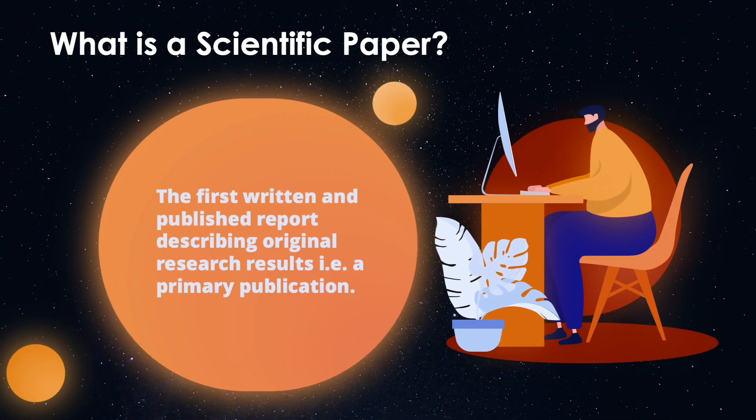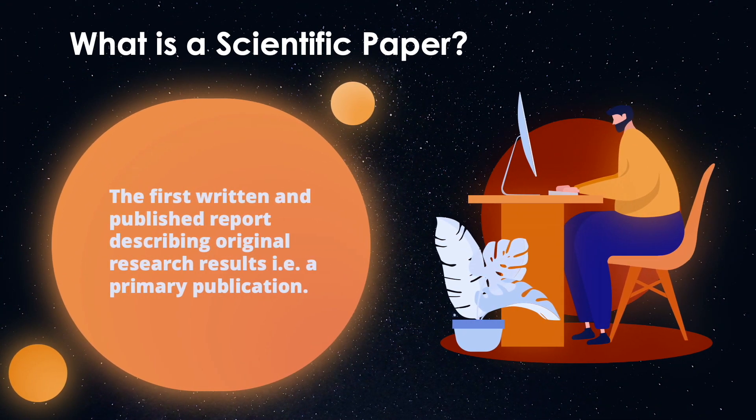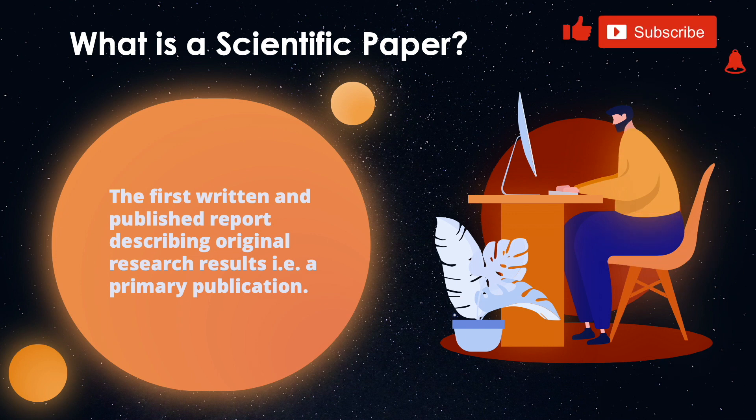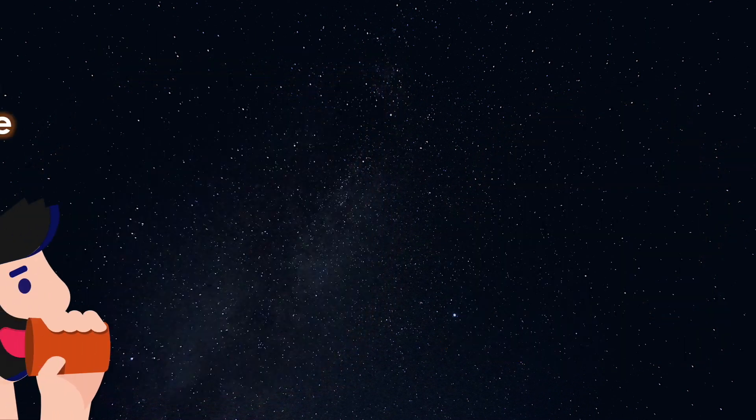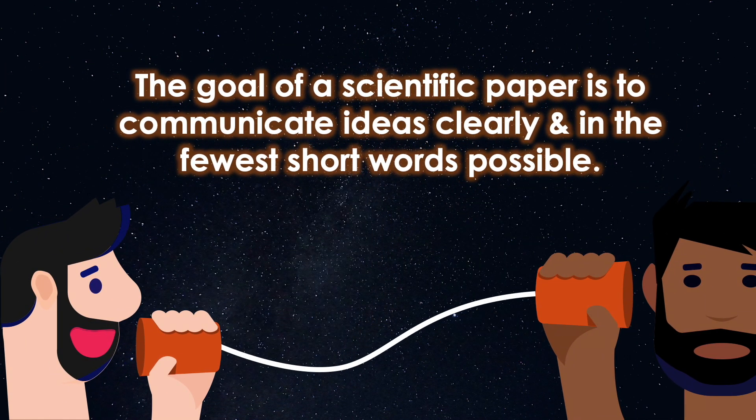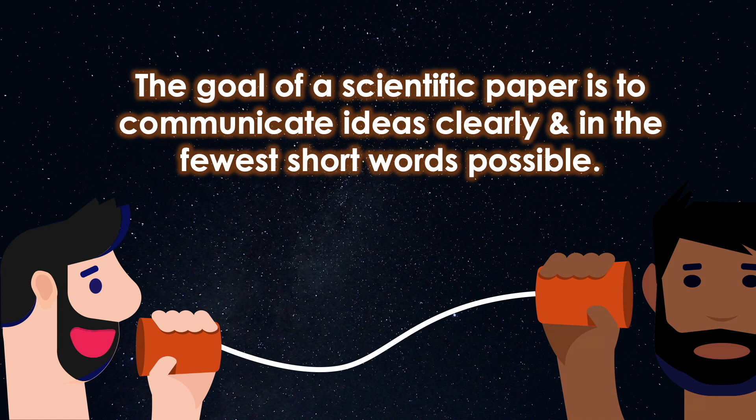So, what is a scientific paper? According to Dey and Gastel, it is the first written and published report describing original research results. In other words, it is a primary publication. And the goal of a scientific paper is to communicate ideas clearly and in the fewest words possible.